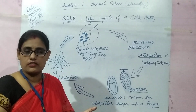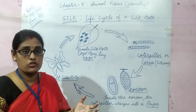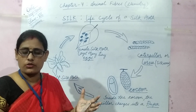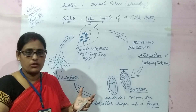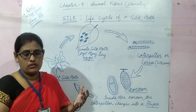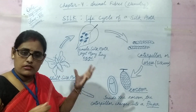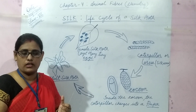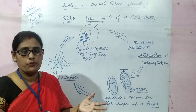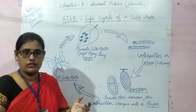Silk is a very precious and expensive fiber because of its luscious appearance. Silk is also a good insulator because it does not conduct heat. That's why it keeps the body warm in winter and cool in summer. There are various varieties of silk like mulberry silk, tussar, kosa, moonga, etc. But mulberry silk is the best quality.